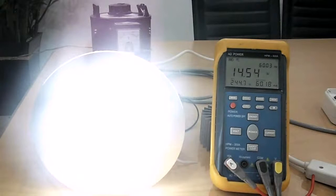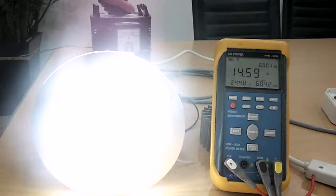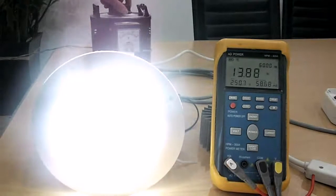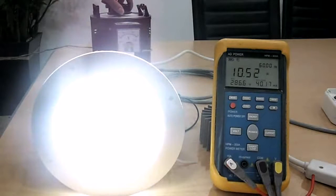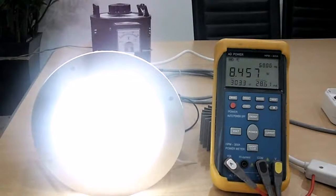Now we will increase voltage up to 300V to show high reliability of our lamp. LED chips are perfectly protected even in such high voltage condition.